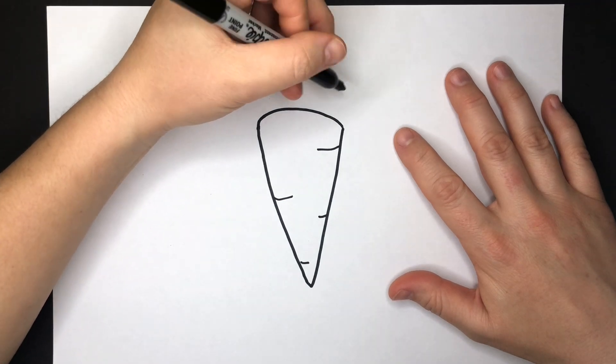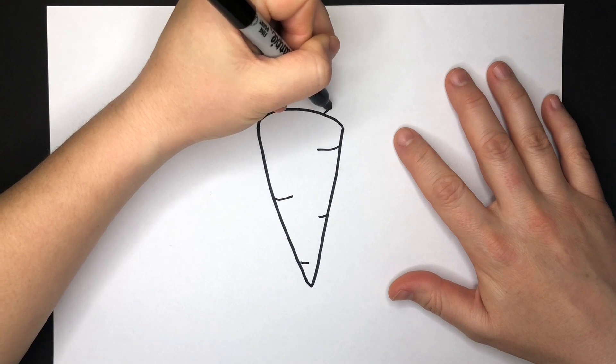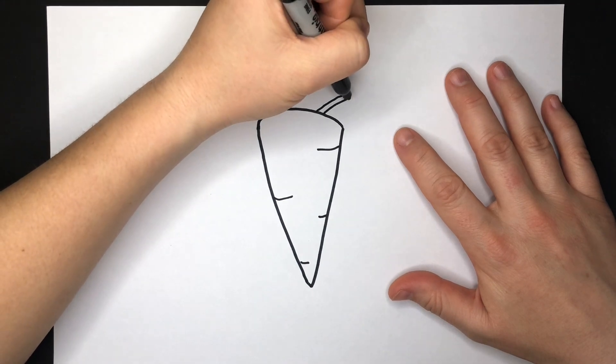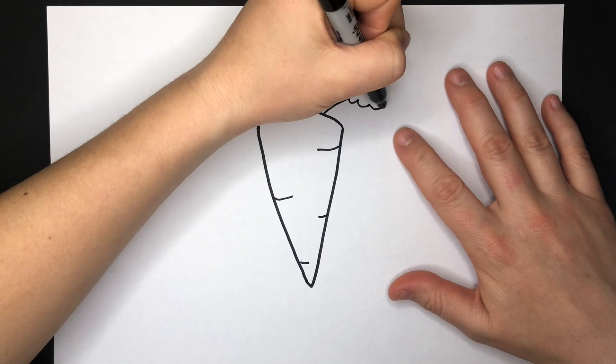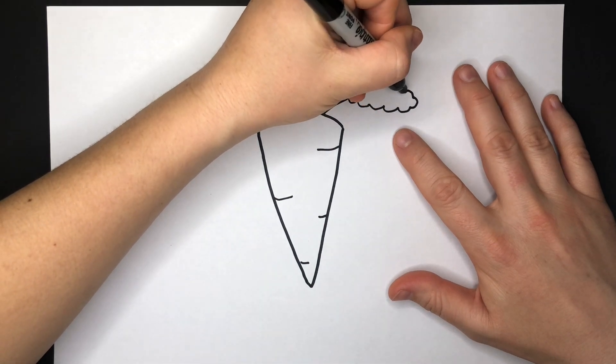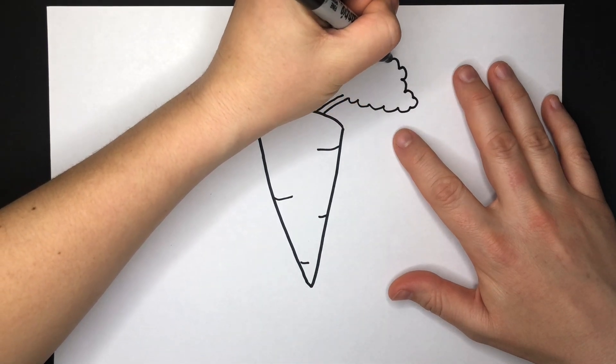And then on the top we're going to start to add some bushy leaves. I'm just going to draw some lines and then make some bushy leaves on it. I love to eat carrots. I eat them all the time for lunch with hummus.